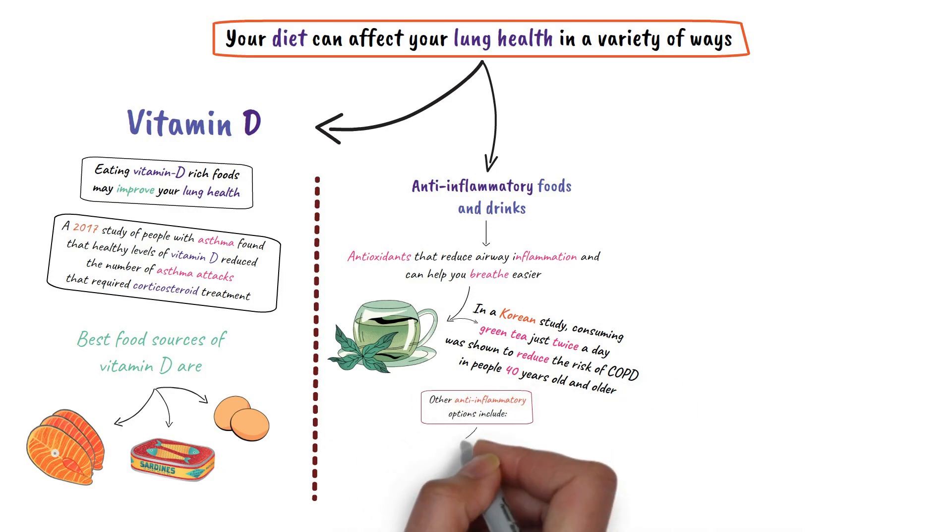Other anti-inflammatory options include berries, broccoli, turmeric, and dark chocolate.